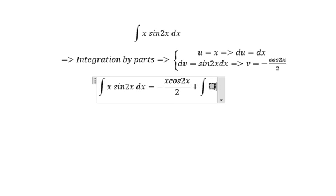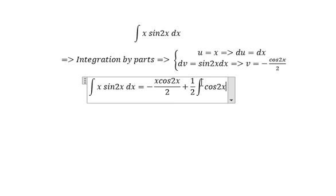And we have the integral. Now we take 1 over 2 outside, and we have cosine 2x dx.